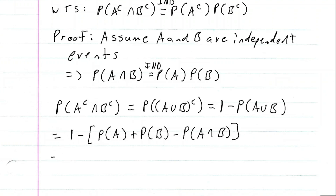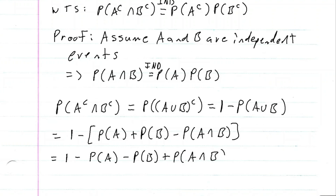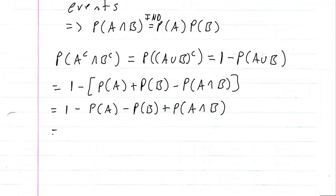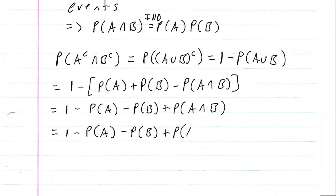Distributing the negative gives us one minus the probability of A minus the probability of B plus the probability of A intersection B. From our assumption, the probability of A intersection B equals the probability of A times the probability of B. So this becomes one minus the probability of A minus the probability of B plus the probability of A times the probability of B.